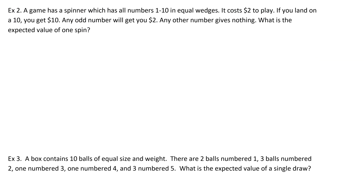Example two. The game has a spinner which has all numbers 1 through 10 in equal wedges. It costs $2 to play. If you land on a 10 you get $10; any odd number will get you $2; any other number gives nothing. What is the expected value of one spin? Again, we're going to have x as our values and p of x as the probability that each of those values happens.